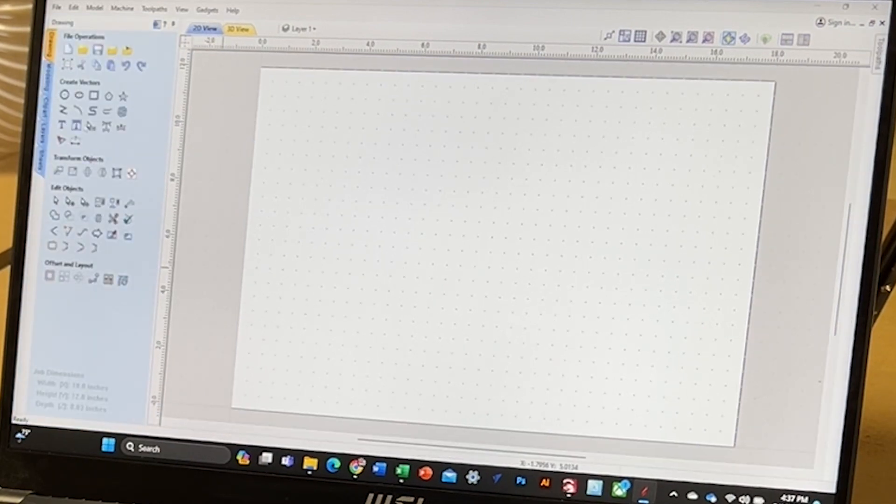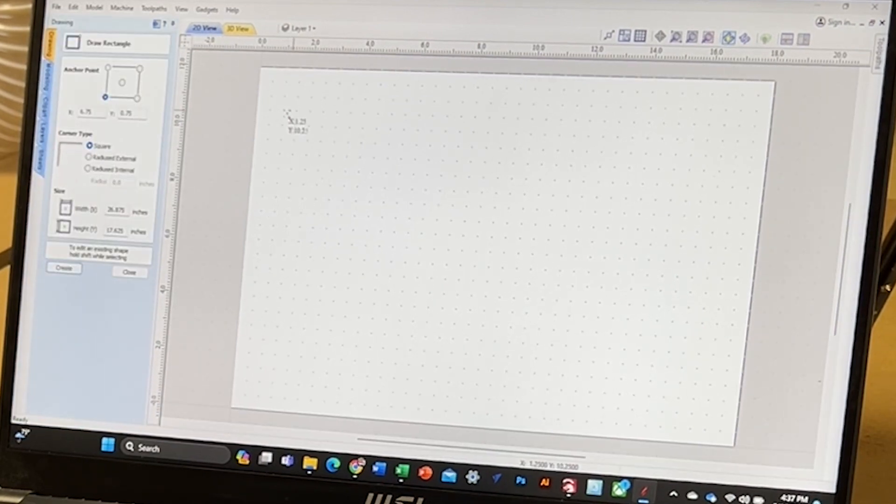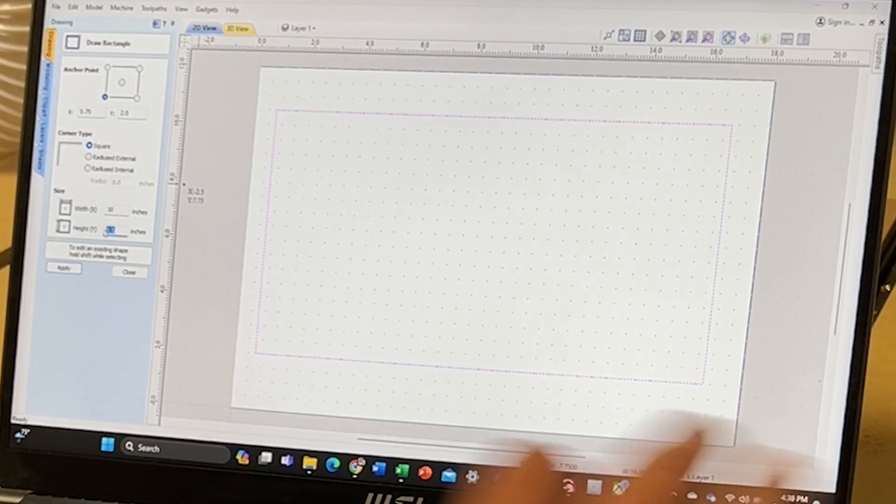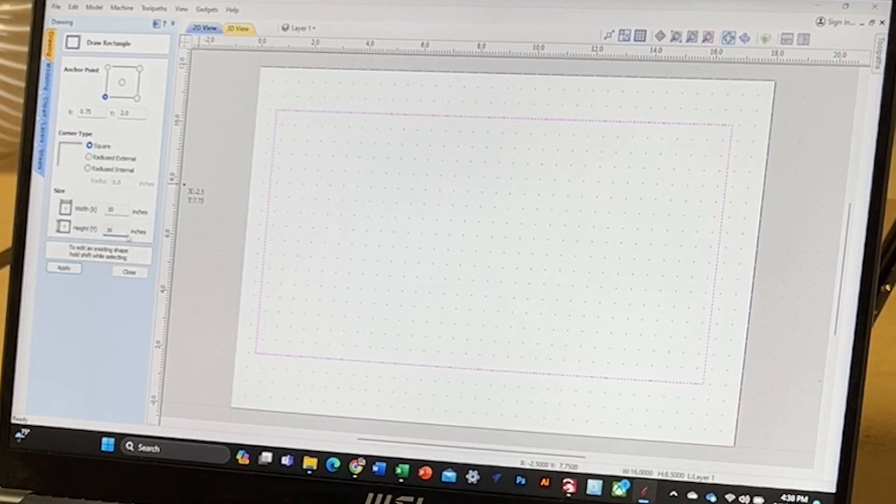So I just fired up VCarve Pro and made this little cutout so I could use the material. I'm using a phenomenal camera so I don't know why it came out fuzzy, but I will drop all the dimensions of what I did in my blog that will be linked to this so you can see exactly the dimensions of everything I did.